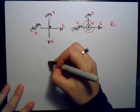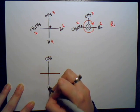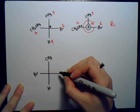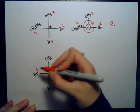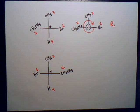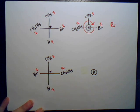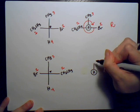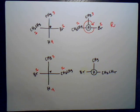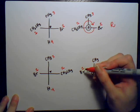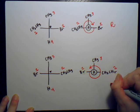Drawing the mirror image of this to show it will be S: CH3 on top, hydrogen on the vertical, bromine moves to the other side, CH2CH3 stays. Since hydrogen is on the vertical (already pointing back), no flipping. Drawing CH3, CH2CH3, and bromine with priorities 1, 3, 2. Reading 1 to 2 to 3 is counterclockwise, therefore S.